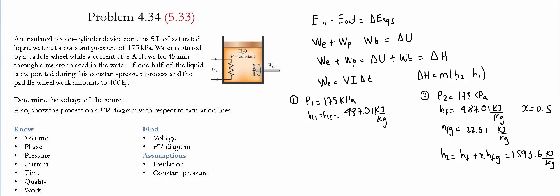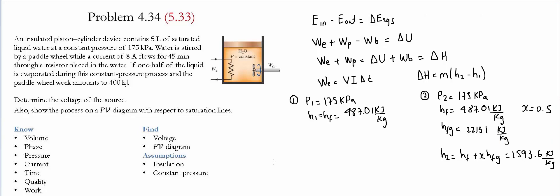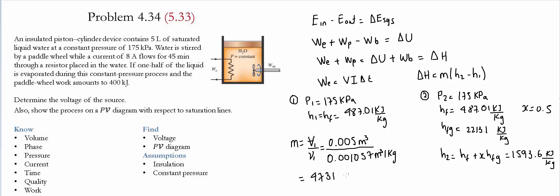The only remaining unknown is the mass. The initial volume is 5 liters (0.005 m³), and from the table at 175 kPa the specific volume at state 1 is 0.001057 m³/kg. Mass equals the initial volume divided by the specific volume: 0.005 divided by 0.001057, giving a mass of 4.731 kg.